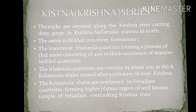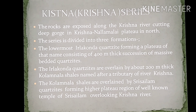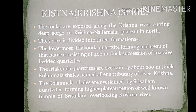The Nallamalai is followed by the Kistana or Krishna series. These rocks are exposed along the Krishna river, cutting a deep gorge in the Krishna-Nallamalai plateau north of Kadappa. The series is divided into three formations: the lowermost Irlakonda Quartzite, forming a plateau of 400 meter thick succession of massive bedded quartzites; overlaid by the 200 meter thick Kolumnala Shales, named after a tributary of the Krishna river; and topped by the Srisailam Quartzite, forming the higher plateau region of the well-known Srisailam temple overlooking the Krishna river.